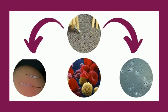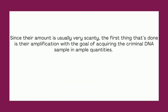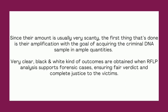The body samples recovered from the crime site, such as hair follicles, blood cells from blood stains, and seminal fluid, are extremely critical for DNA isolation as they are available strictly once. Since their amount is usually very scanty, the first thing done is their amplification with a goal of acquiring the criminal DNA sample in ample quantities. Very clear outcomes are obtained when RFLP analysis supports forensic cases, ensuring a fair verdict and complete justice to the victims.